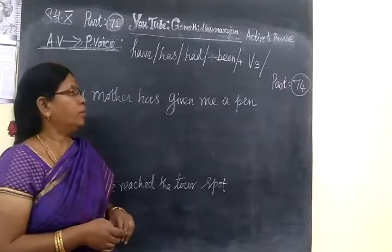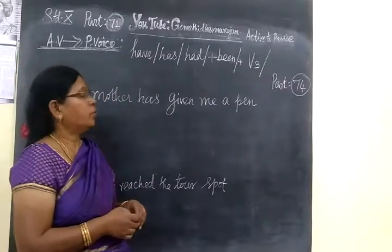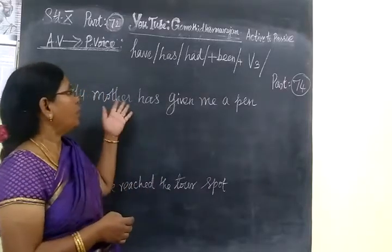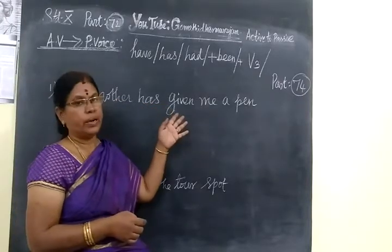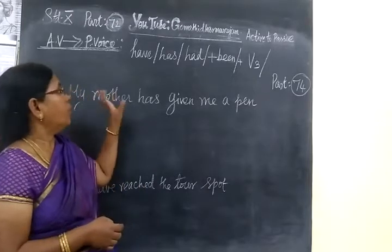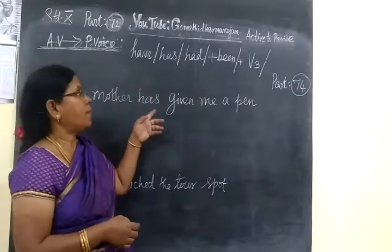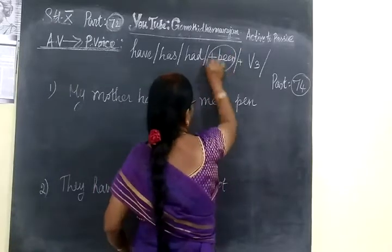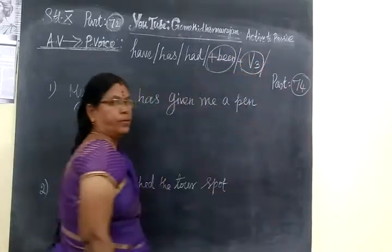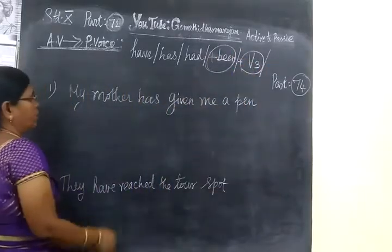Now we want to see part 74. In this type, we see have, has, had. Now the other ones, form of been, then work 3. We are given have, has, had. That's a been useful one. And we are using work 3. Now see the first example.